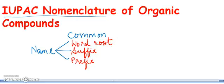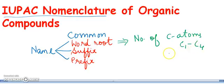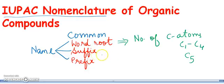The word root represents the number of carbon atoms present in the chain. For chains containing up to four carbon atoms, that means C1 to C4, special word roots are used. For chains containing more than four carbon atoms, C5 onwards, Greek numericals are used. The word root is always linked to the suffix.